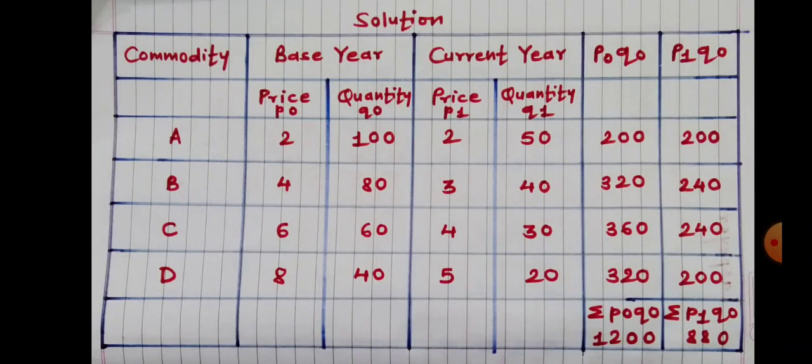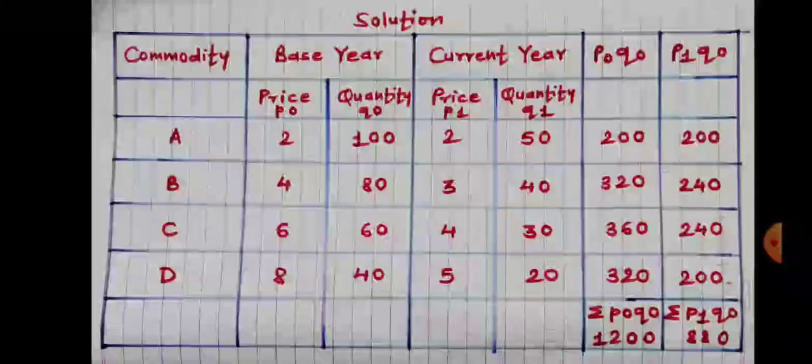Now let us find out P1Q0, i.e. P1 multiplied by Q0. 2 into 100 is 200; 3 into 80 is 240; 4 into 60 is 240; 5 into 40 is 200. After finding out P1Q0, we have to find out Sigma P1Q0, i.e. summation of P1Q0. So 200 plus 240 plus 240 plus 200, we get 880. So Sigma P1Q0 is equal to 880.